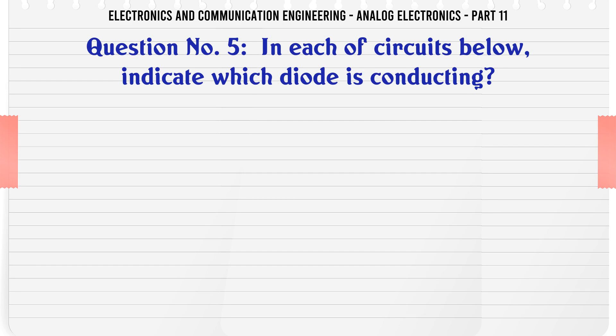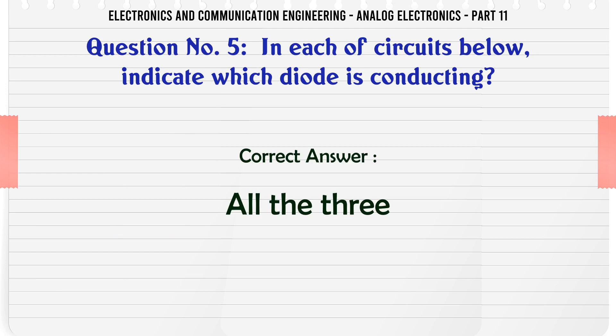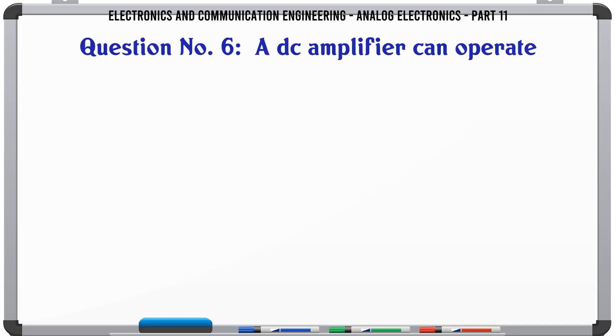In each of the circuits below, indicate which diode is conducting. A. Figure A. B. Figure B. C. Figure C. D. All the three. The correct answer is: All the three.